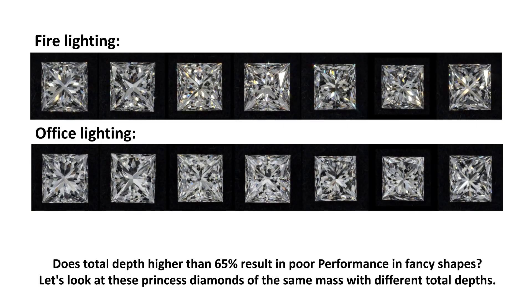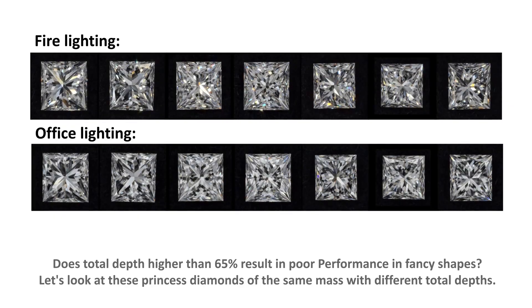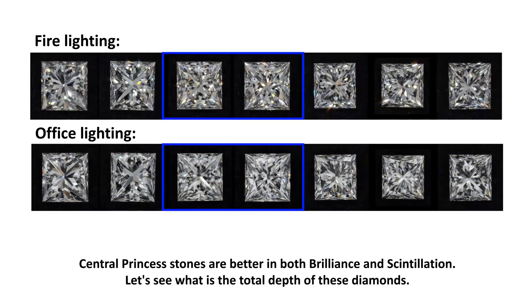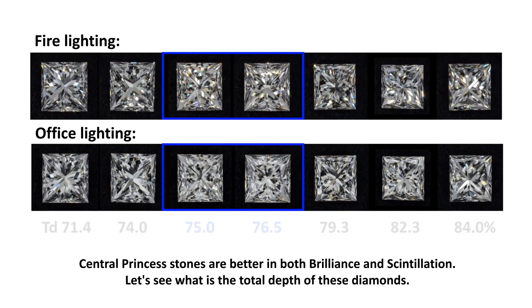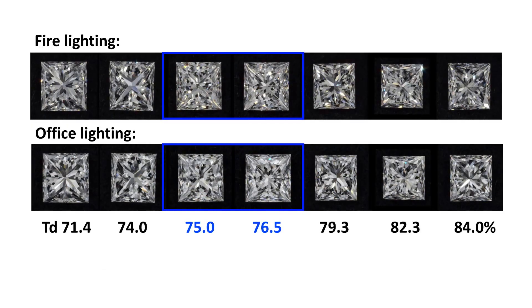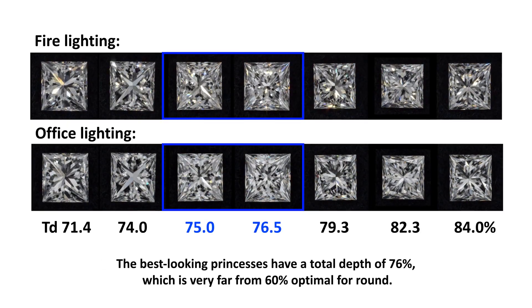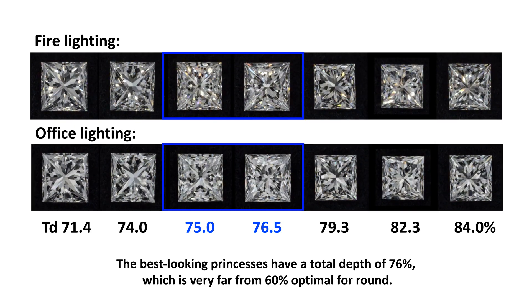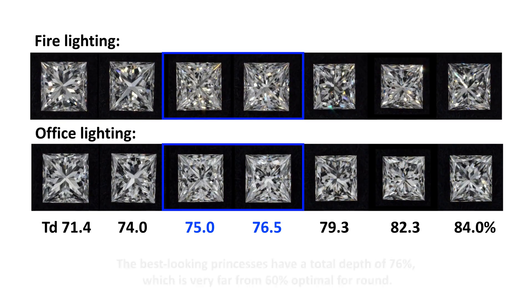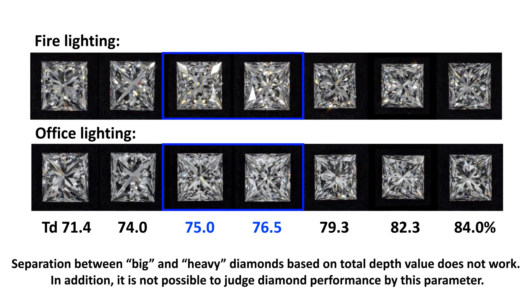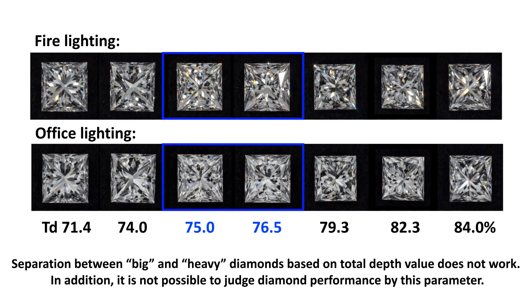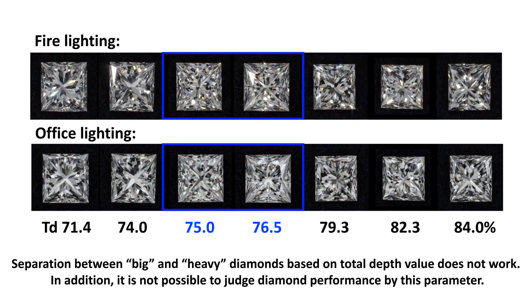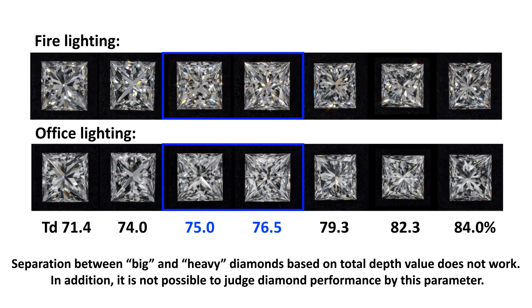Does total depth higher than 65% result in poor performance in fancy shapes? Let's look at these princess diamonds of the same mass with different total depths. The central princess stones are better in both brilliance and scintillation. The best-looking princesses have a total depth of 76%, which is very far from the 60% optimal for round. Separation between big and heavy diamonds based on total depth value does not work, and it is not possible to judge diamond performance by this parameter.